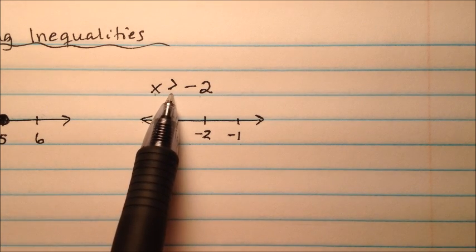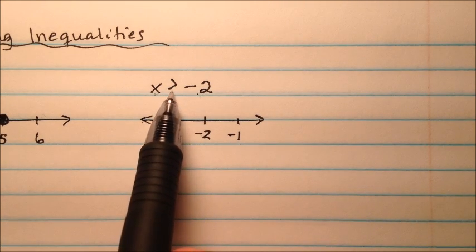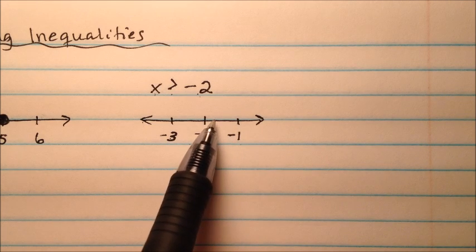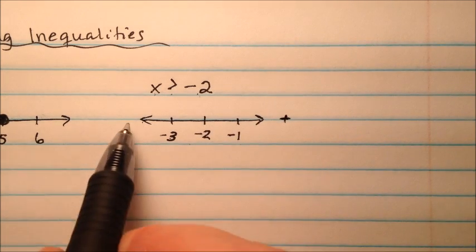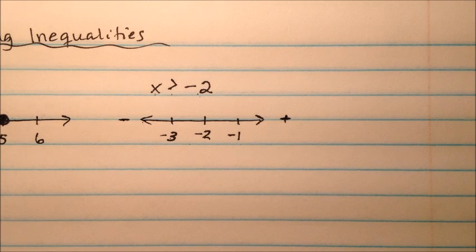So in this example, x is greater than negative 2. So it's going to be all the numbers that are bigger than negative 2. So it will be on this side of the number line. Because this stuff is bigger on this side, and this stuff is littler on this side.